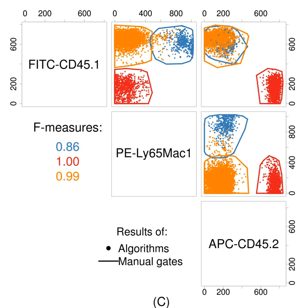The classification results file format has been developed to exchange the results of manual gating and algorithmic classification approaches in a standard way. CLR is based on the commonly supported CSV file format with columns corresponding to different classes and cell values containing the probability of an event being a member of a particular class, captured as values between 0 and 1. Although originally designed for flow cytometry, it is applicable in any domain that needs to capture either fuzzy or unambiguous classifications of virtually any kinds of objects.